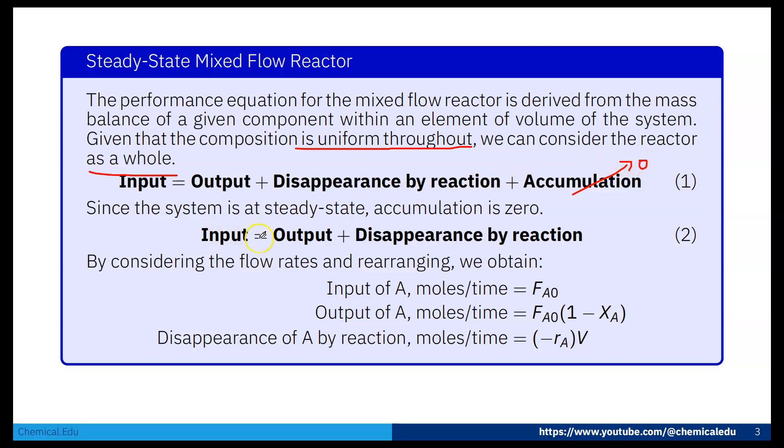So input equals output plus disappearance by reaction. By considering the flow rates and rearranging, we obtain: input of A moles per time, that is FA0; output of A moles per time, that is FA0(1 - XA), or we can write FA. So FA is FA0(1 - XA), where XA is the conversion. And disappearance of A by reaction moles per time, that is -rA times V.